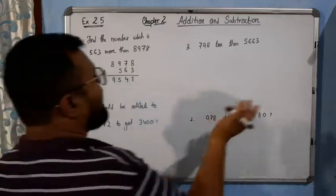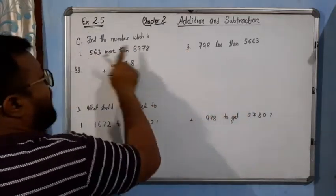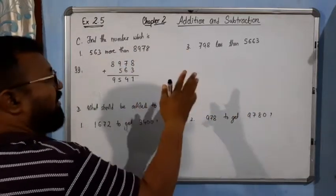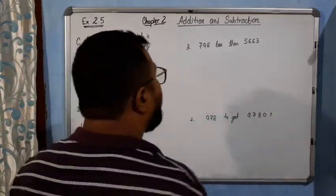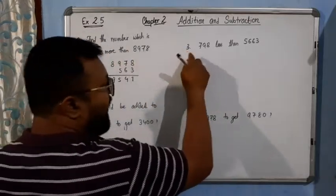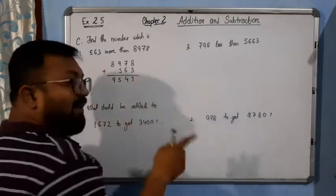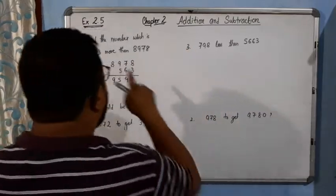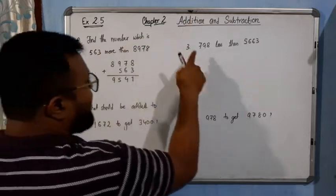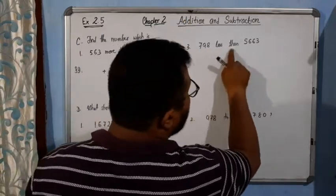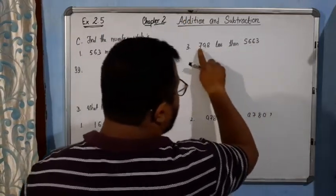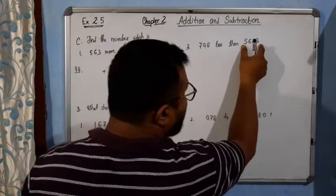Very simple. Now come to the next question, question number 3. Question number 2 was just like this, so I left that one for you to do by yourself. I will solve question 3 right now. Question 4 you will do by yourself. Now find the number 798 less than 5663.